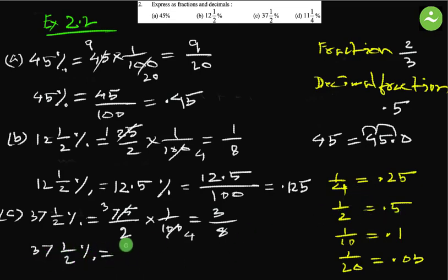Now we have to express as decimal. Percent, we know half is 0.5, so we can write 37.5 percent means by 100 equals to. There are two zeros, so we have to shift two digits left. The decimal point will go two digits left, so it will be 0.375.